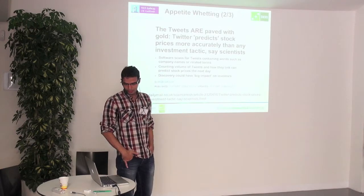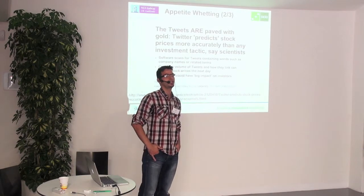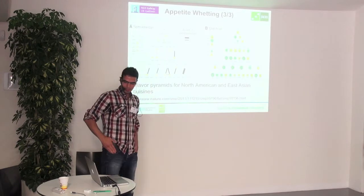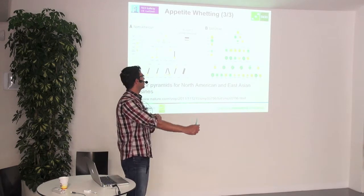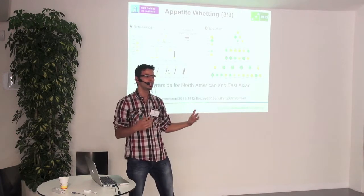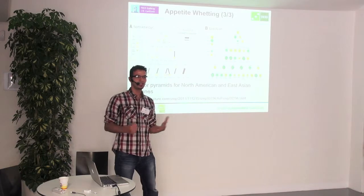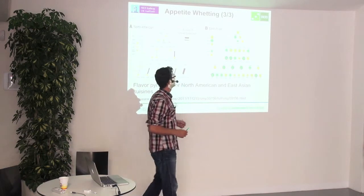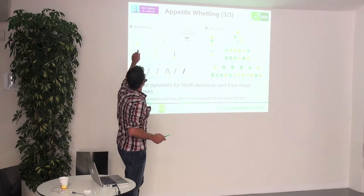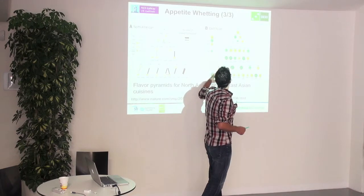Another example is Twitter. By analyzing tweets, people were able to predict changes in stock markets and in some other contexts like the revenue of movies at box offices. A last example, and this is really cool: a group of researchers took a large number of recipes, looked at the components and different flavors of each recipe, and just by analyzing the data, they were able to tell the differences between cuisine from North America and that from East Asia. This diagram shows that North Americans use a lot of milk and butter, while East Asia uses soy sauce and sesame oil.